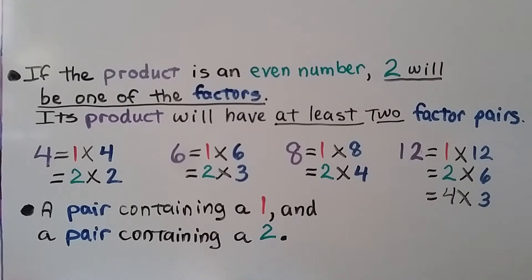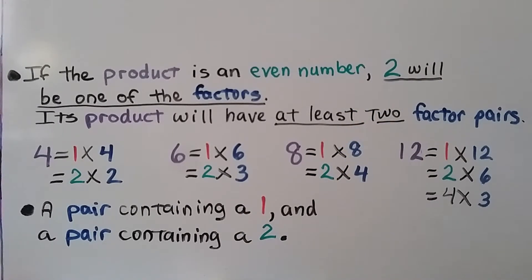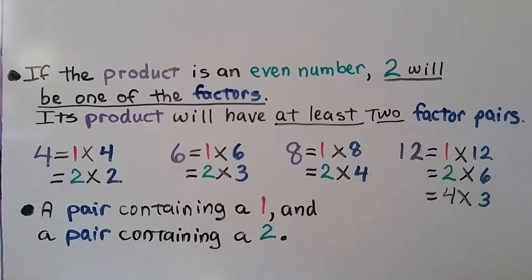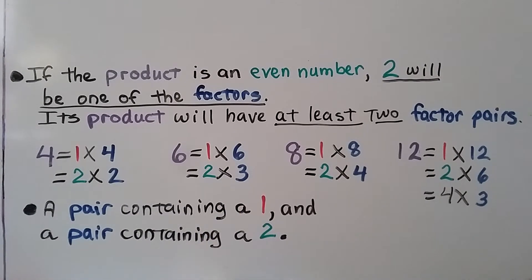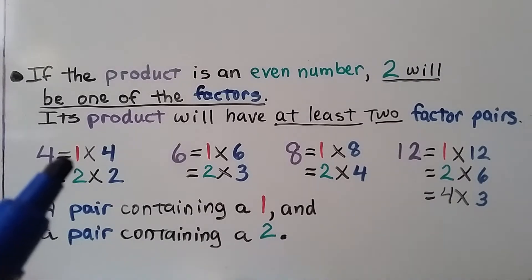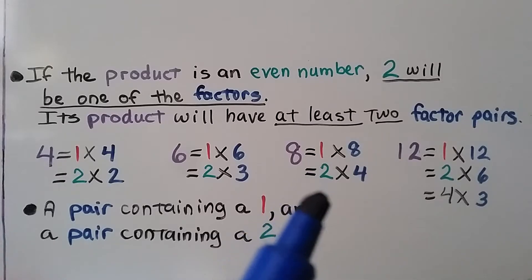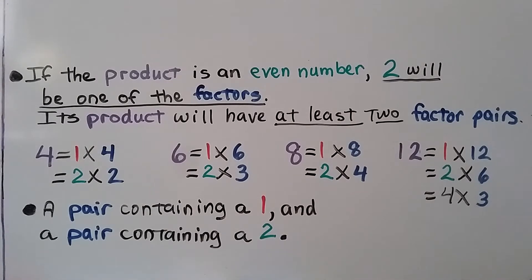We already know that a whole number greater than 1 has at least two factors — itself and 1. If the product is an even number, 2 will be one of the factors. Its product will have at least two factor pairs: a pair containing 1 and a pair containing 2. Even numbers like 4, 6, 8, 10, 12, 14, 16 — for 4 we have 1 times 4 and 2 times 2; for 6 we have 1 times 6 and 2 times 3. But look at 12 — it's got three factor pairs: 1 times 12, 2 times 6, and 4 times 3.